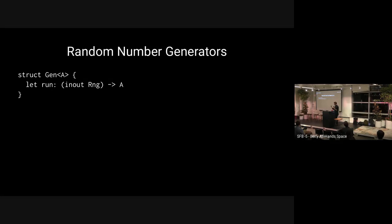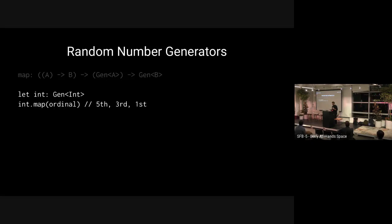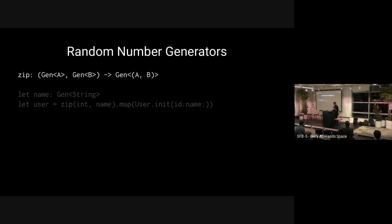From this base unit you can start exploring what it means to have generators of random ints and booleans — what the standard library gives you — but also random strings, random user models in your own domain, random UI images for generative art, and even random functions. This generic signature puts it all in your hands. The type supports map: if you had a base int random number generator, you can map it with an ordinal function to get a generator of ordinal numbers — fifth, third, first — with just one line.